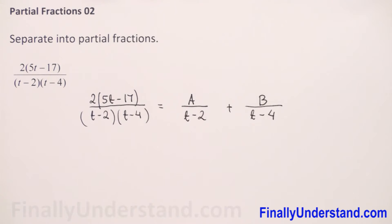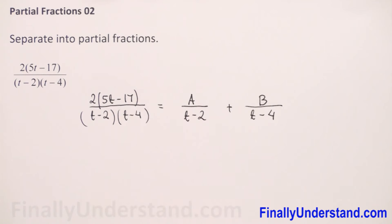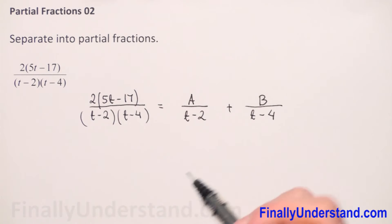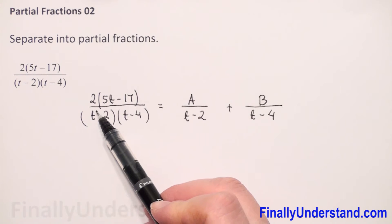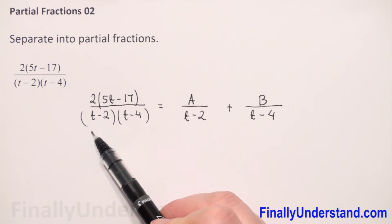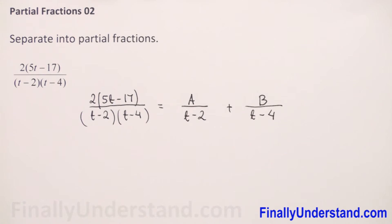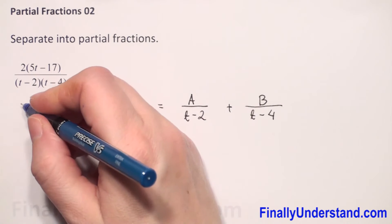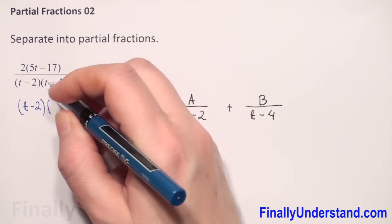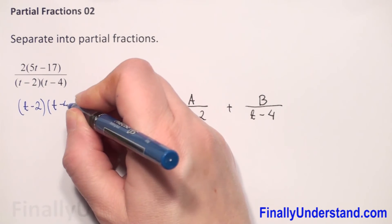To find A and B, we first have to get rid of the denominators. We do this by multiplying each side of the equation by the lowest common denominator, which is always the denominator of our original fraction — so it will be (t minus 2)(t minus 4). We multiply both sides by (t minus 2)(t minus 4).